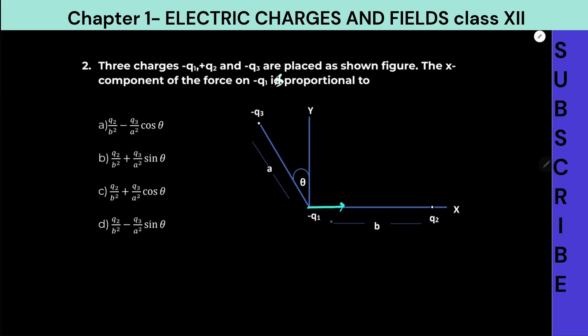So the force acting on q1 will be along this direction, and force acting on minus q1 due to minus q3 will be repulsive, in this direction. Why repulsive? Because both are negative charges. And why is F1 this side? Because this is negative and that is positive. I hope you understood how we made the arrows.